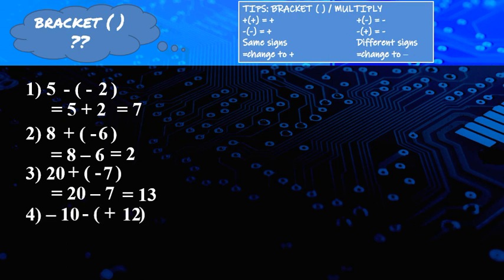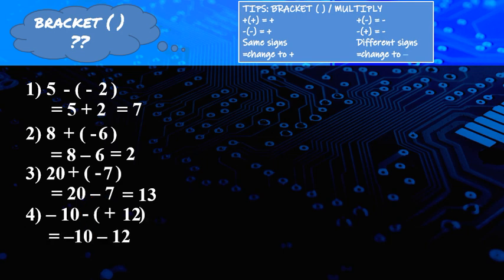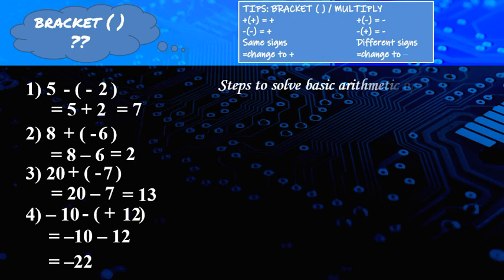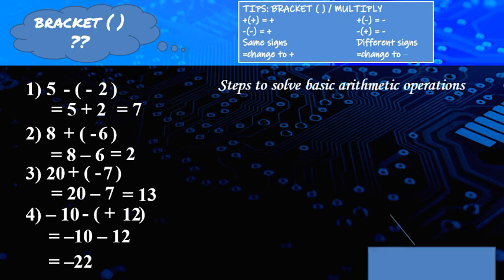Number 4: negative 10 minus (positive 12). Solve the bracket first — plus and minus is different sign, so it becomes minus. It is written as negative 10 minus 12. Same sign — plus the number and retain the sign — so the answer is negative 22.